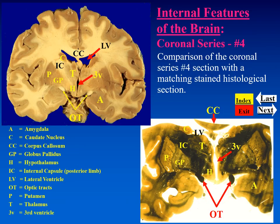Making a comparison of our preserved specimen structures with the stained specimen, you can see quite clearly all those structures: the corpus callosum, the lateral ventricle, third ventricle, thalamus, hypothalamus, posterior limb of the internal capsule, putamen and globus pallidus, optic tracts, and the amygdala.